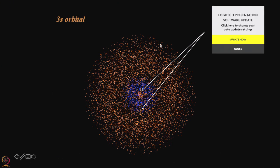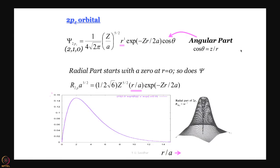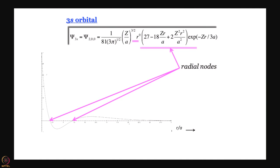Now let us go to the 3s orbital. The 3s orbital, as we know, has a polynomial of second order — three terms. A polynomial of second order equated to 0 gives you 2 roots, and you can work out what these roots are — I think they are 1.9 and 9 if you take z to be 1 and a to be 1. So they occur in 2 different places — you can see what the values are here.